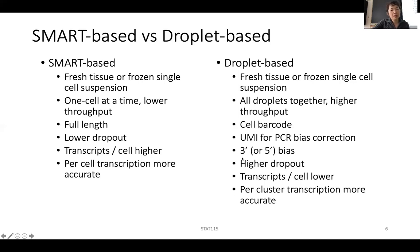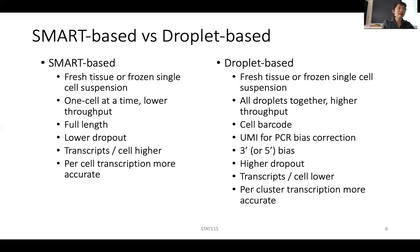The early droplet-based approaches all have 3' bias. Recently, 10X Genomics released a new reagent that allows you to tag the transcript at the 5' end, giving 5' bias instead. So you either have 3' bias or 5' bias, because that's how they can add the barcodes and UMI to the end of the transcript. Transposase is also used, and the middle part of the transcript — since it's not labeled — cannot be captured or sequenced. Even if you sequence it, you wouldn't know which cell it came from.